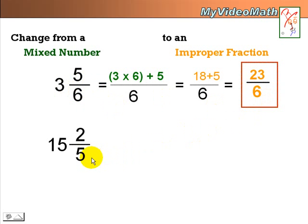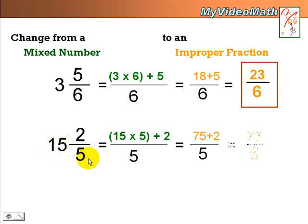This is a little tougher one because it had a larger whole number, but that's okay. The process is still the same. Let's give it a try. 15 times 5 plus 2. I'm sure you got the right answer. 77 over 5.